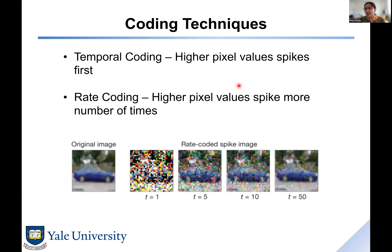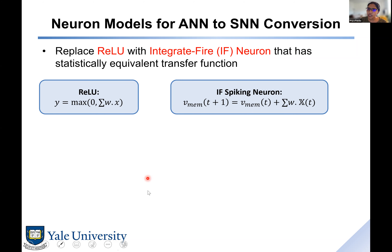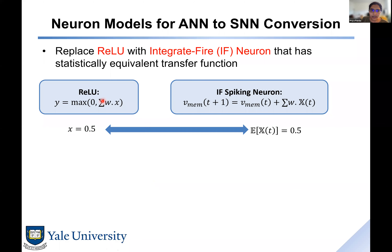The goal with conversion: given trained weights of an ANN, convert the ReLU neuron to an integrate-and-fire (IF) neuron — where the leak value is one, meaning no leak, just pure integration. The approach is statistical matching. A ReLU neuron: y = max(0, Σwx). An integrate-and-fire neuron: the membrane potential at time t+1 depends on the membrane potential at time t (with leak coefficient of 1 for IF, or 0.99 for 1% leak per step, etc.) plus the weighted sum of incoming spikes.